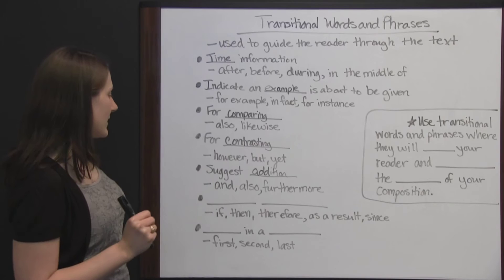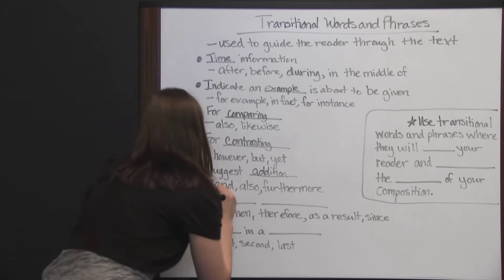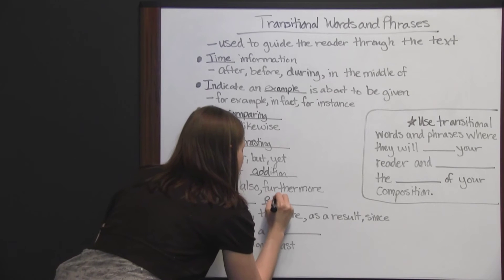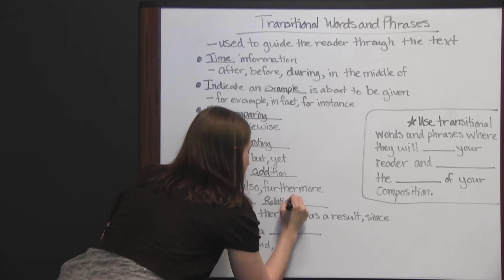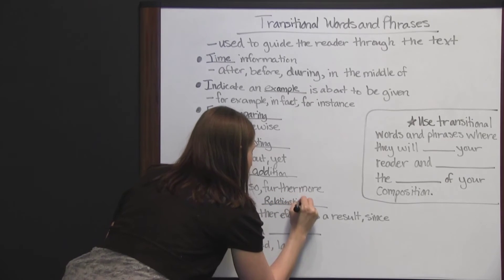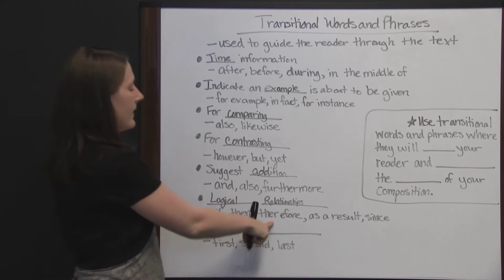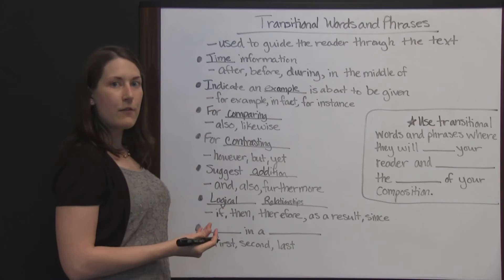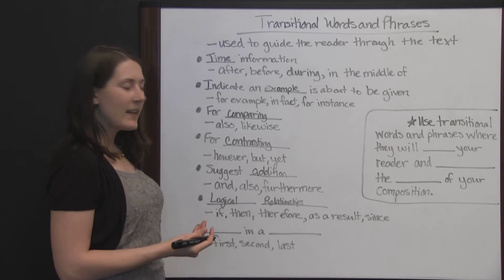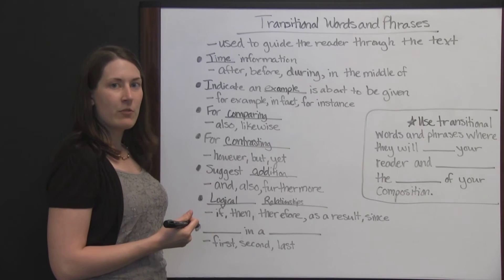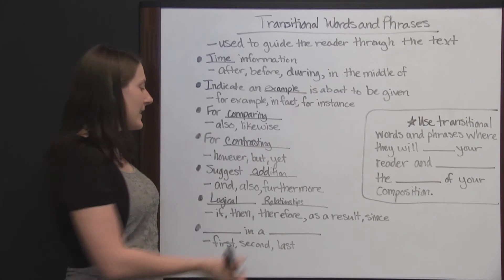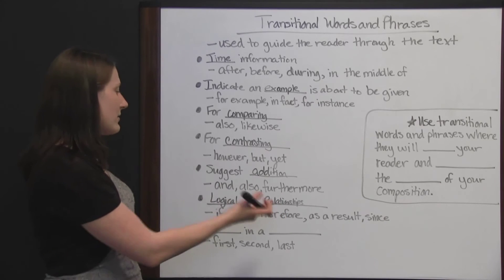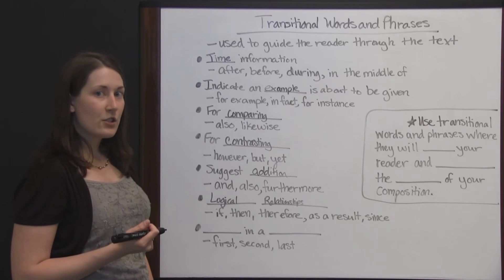You can have transitions that reflect logical relationships. Words like 'if,' 'then,' 'therefore,' 'as a result,' and 'since' show cause and effect. For example: 'If I go to bed late, I might be tired in the morning. I went to bed late; therefore, I was tired in the morning.' These transitions reflect logical relationships.